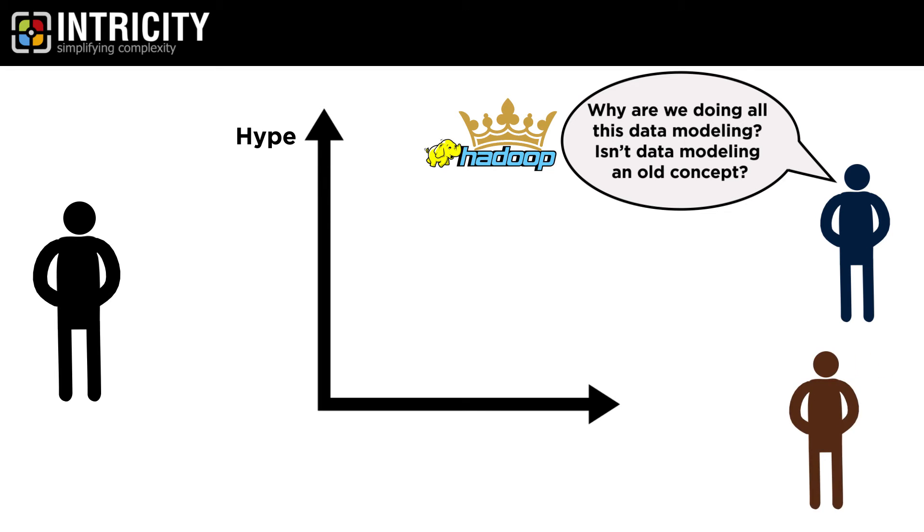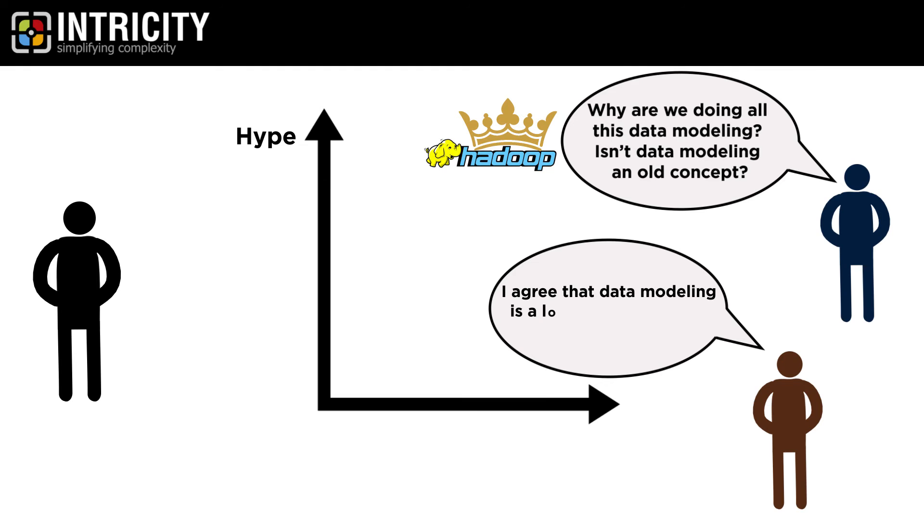To which our solution architects said, I agree that data modeling is a long-tested concept, but it does work. Sort of like Pi. Why do we still use Pi? Isn't that an old method of calculating a circle?